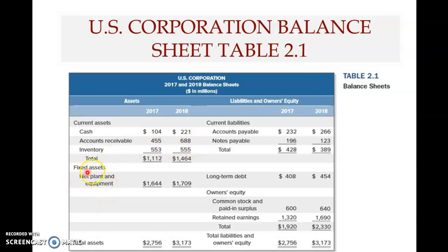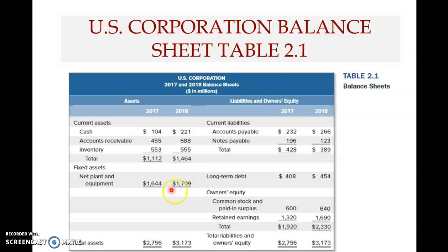The last asset item is net plant and equipment — fixed assets. Here the figure is 1,709 million dollars, which translates to approximately 1.7 billion dollars in fixed assets at end of 2018. Adding all assets together: total current assets are roughly 1.5 billion, plus 1.7 billion in fixed assets, giving total assets of approximately 3.2 billion dollars. In the next video we will look at the current liabilities side.